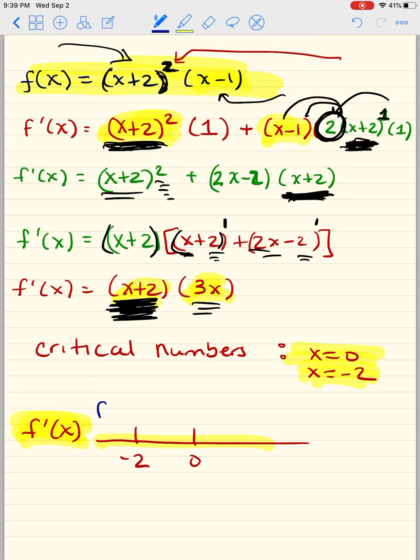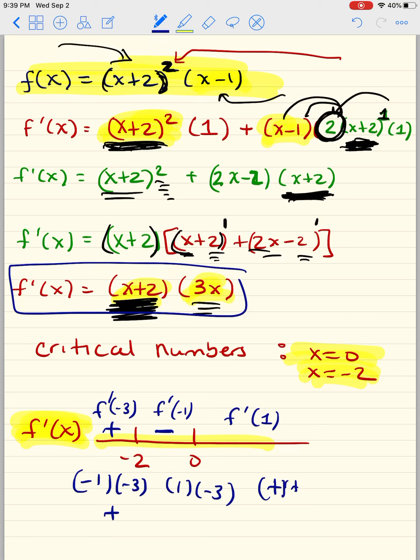Now we're going to test. So I'm going to say what is f prime of negative 3, what is f prime of negative 1, and what is f prime of positive 1? Well, for negative 3, when I plug it back in here, I get a negative 1 times a negative 3, which shows a positive, so this is positive. And now for negative 1, I'm going to get a positive 1 times a negative 3, so that's negative. And then for f prime of 1, I get a positive and a positive, and so that's a positive.